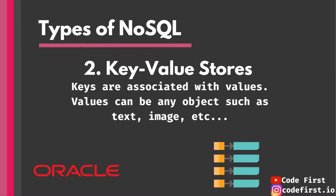Another type is the basic key-value store database. This is similar to Oracle NoSQL — not the Oracle relational database, but a different product from Oracle. Keys are associated with values, and values can be any object, such as text or an image or whatever you need.